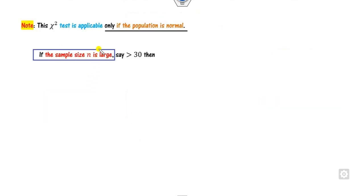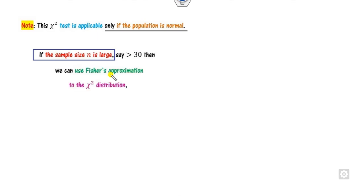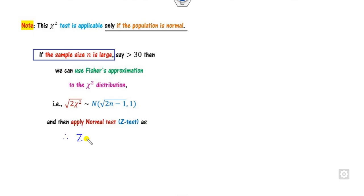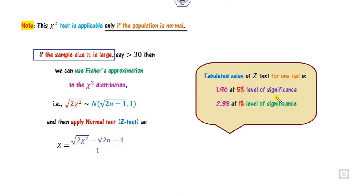When the sample size is very large, specifically when n > 30, instead of using the chi-square critical value we apply the Fisher normal approximation to the chi-square. That is, √(2χ²) follows approximately a normal distribution. So for large samples we apply the z-test: z = (√(2χ²) − √(2n−1)). For a 5% significance level, the critical value is 1.645 for one-tail or 1.96 for two-tail; for 1% significance level it is 2.33 for one-tail.